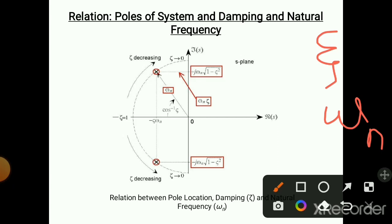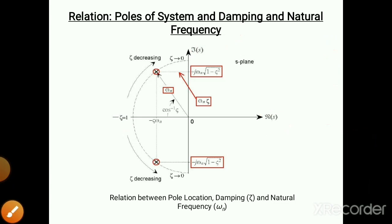When we find the roots of the equation, the roots have two parts: a real part and an imaginary part. The real part is plotted on the x-axis and the imaginary part is shown on the y-axis. The damping coefficient zeta is loaded on the x-axis — here it is minus zeta on the left and plus zeta on the right. On the y-axis you will find omega_n.